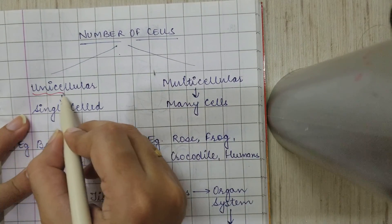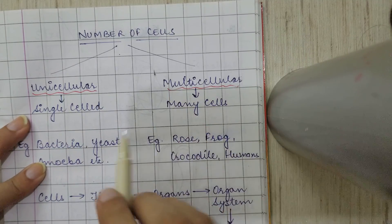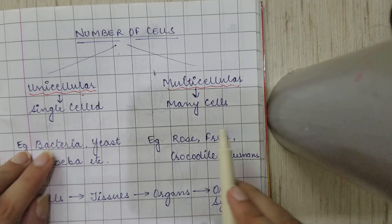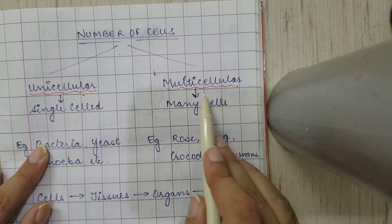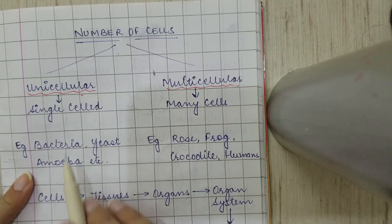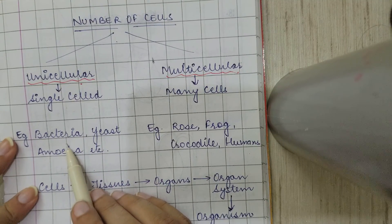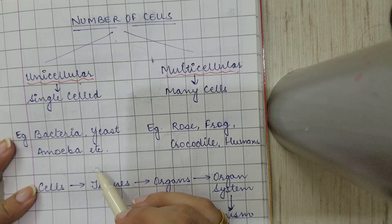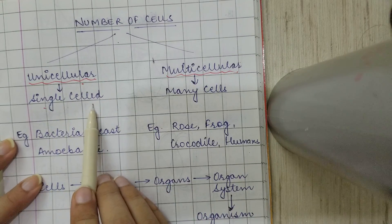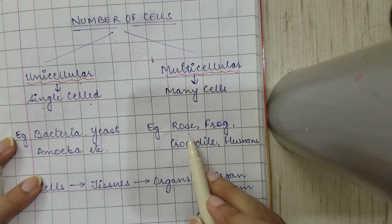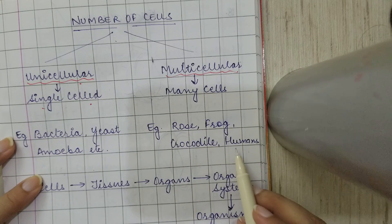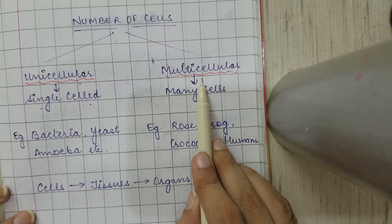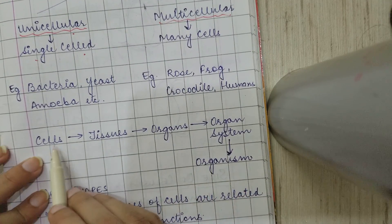On the basis of the number of cells, organisms are classified into two categories: unicellular and multicellular. Unicellular means the organism is formed by a single cell only, whereas multicellular means many cells together form an organism. For example, bacteria, amoeba, yeast, and Chlamydomonas are unicellular organisms, while a rose plant, frog, crocodile, and humans are multicellular organisms made up of many cells.